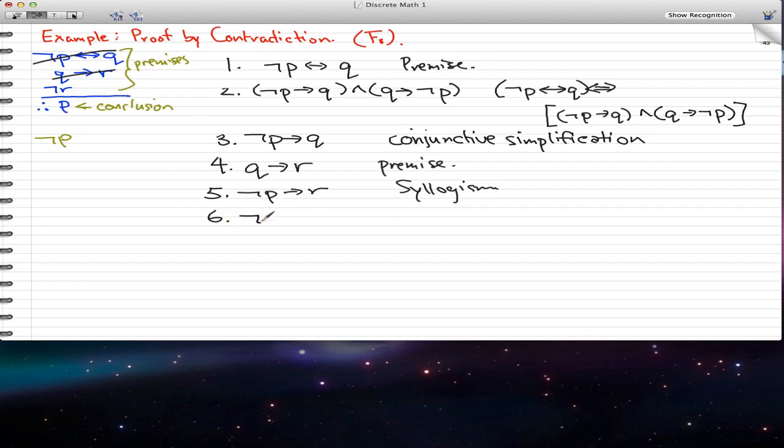Next we have negated p, and this one is the premise that we assumed. So this is the premise that we assumed. We have negated p implies r, negated p. From that, we can use the rule of detachment or modus ponens to get r.